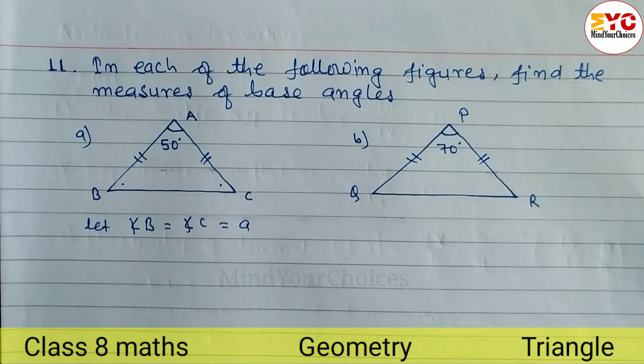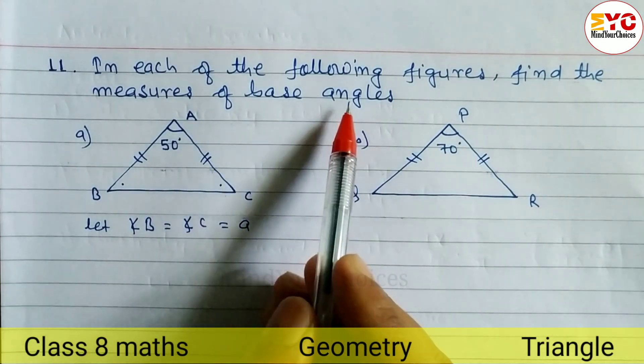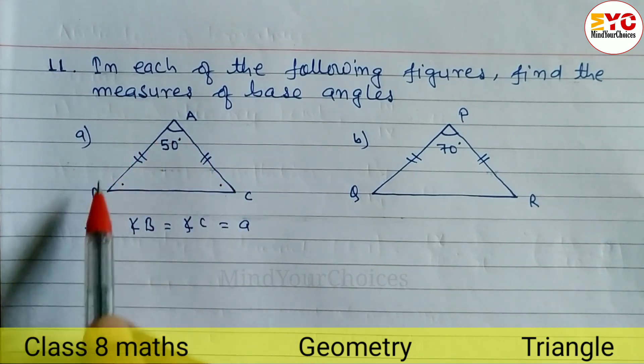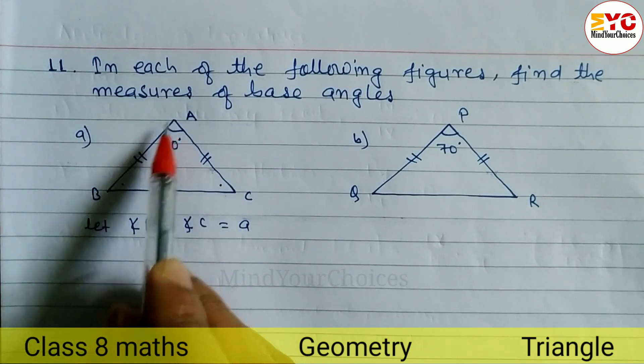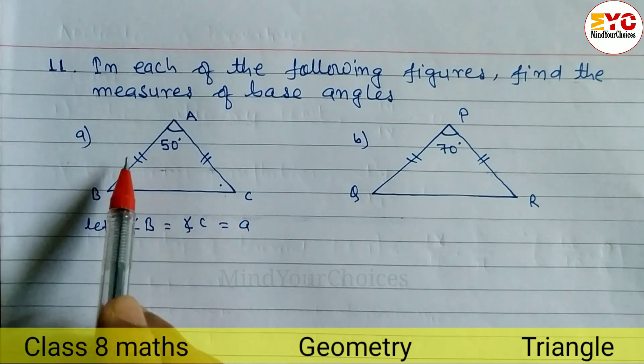In this video, we will learn how to find out base angles. We have to find out the base angle. You can see here, this is an isosceles triangle. A, B, C is an isosceles triangle.